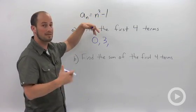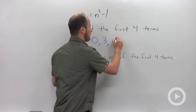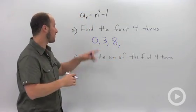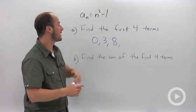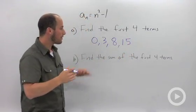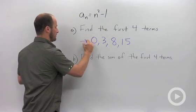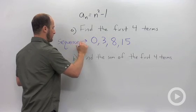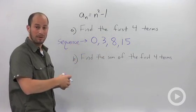Third term: a_3 is 3² = 9, minus 1 is 8. And the fourth term, a_4, plug in 4: 4² = 16, minus 1 is 15.